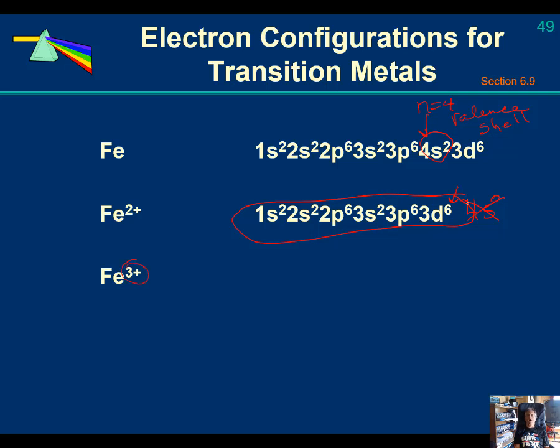So if it's going to lose another electron to become a 3 plus cation, it's going to lose 1 and it's going to come out of the 3d's because that's the next highest energy shell compared to the 4s. And so what we have is the electron configuration for iron 3 plus.